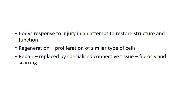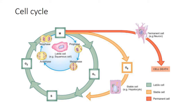To understand the concept of regeneration and repair, it is essential to understand the cell cycle and the three different types of cells based on the ability to divide. The cell cycle is defined as the period between two successive cell divisions. This cell cycle is divided into four unequal phases. The first is M phase, or mitosis phase — the phase in which the actual cell division takes place. It is further subdivided into prophase, metaphase, anaphase, and telophase.